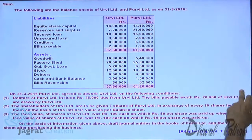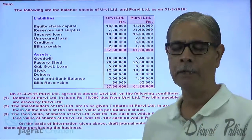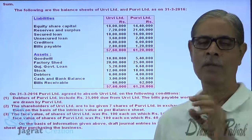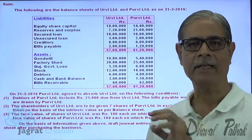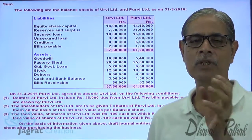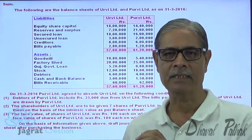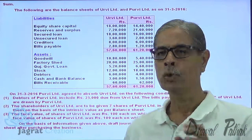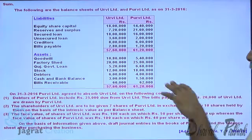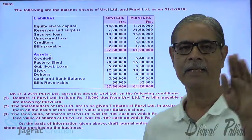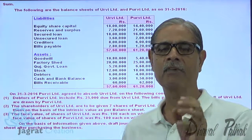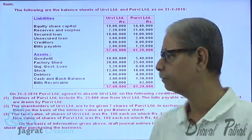Similarly, bills payable for 20,000 of Purvi Limited are drawn on Urvi Limited. So bills receivable and bills payable will be merged together in the balance sheet after absorption — that is also mutual indebtedness. So the total of bills receivable and bills payable, 20,000, will be deducted from the asset side and liability side in the balance sheet prepared after absorption.